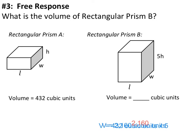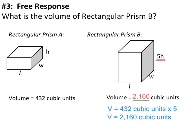This next example asks us to find the volume of rectangular prism B. Rectangular prism A has a volume of 432 cubic units. Notice that the difference between prism A and prism B is that the height has been multiplied by 5. Since the height is 5 times greater, the volume of prism B will also be 5 times greater — giving a volume of 2160 cubic units.